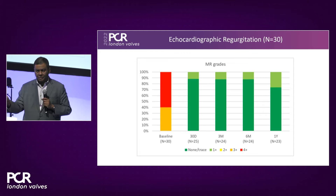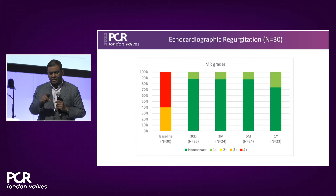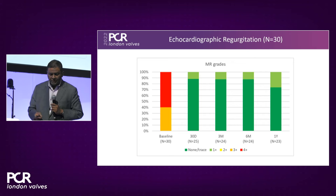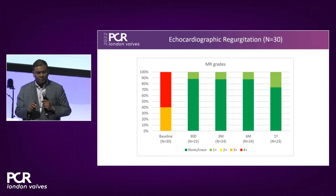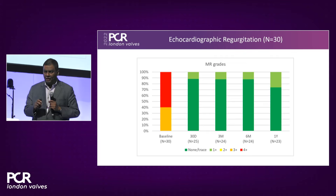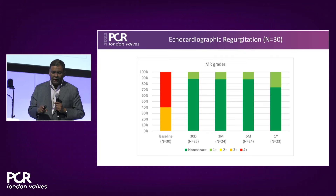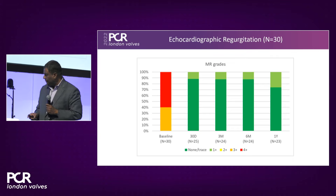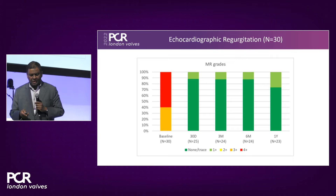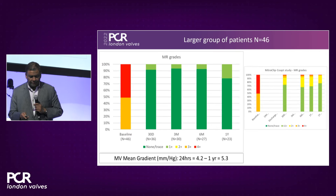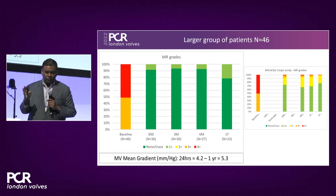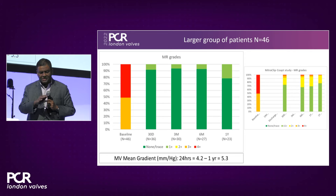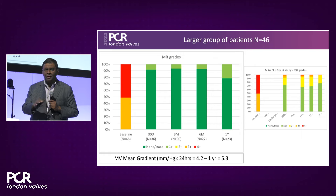For MR reduction: among the 23 patients completing one year (excluding those who died or went to surgery), all patients discharged had MR of 1+ or less. At one year, it was trace to none versus 1+, with almost no patient having mild-to-moderate MR — as expected for a mitral valve replacement. Even looking at all 46 patients, the trend at 30 days and 6 months still shows 1+ or less in all patients.